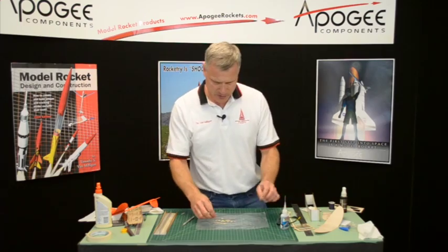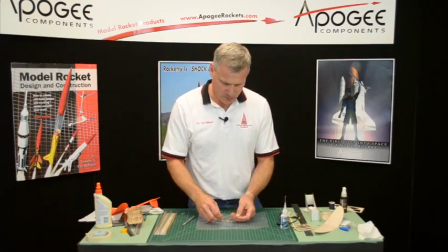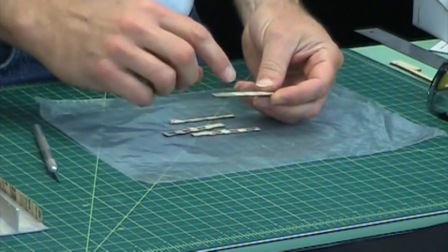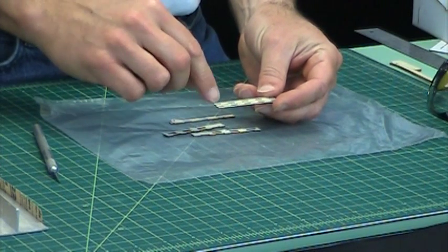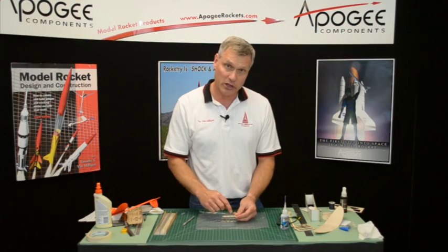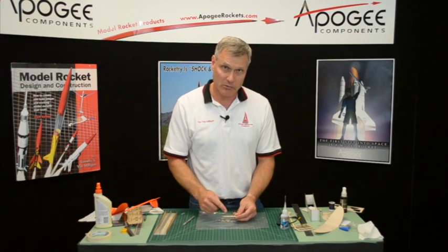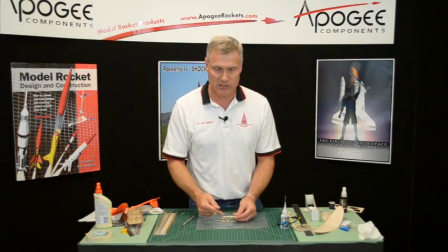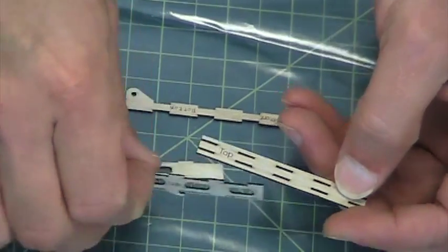Before we start gluing these up, we're going to assemble them. Now what I would suggest is keep the lettering on the outside or on the inside. It doesn't matter which, but all the pieces have to be the same way. So if your lettering is on the outside, keep them on the outside.